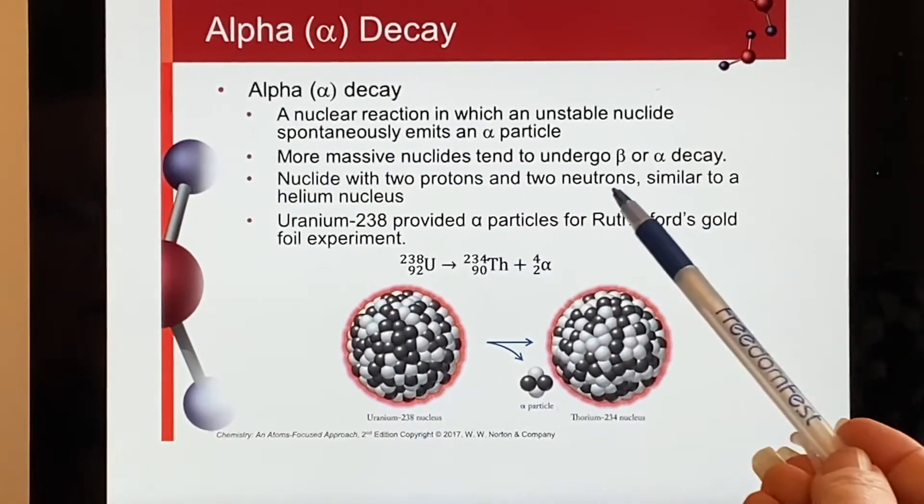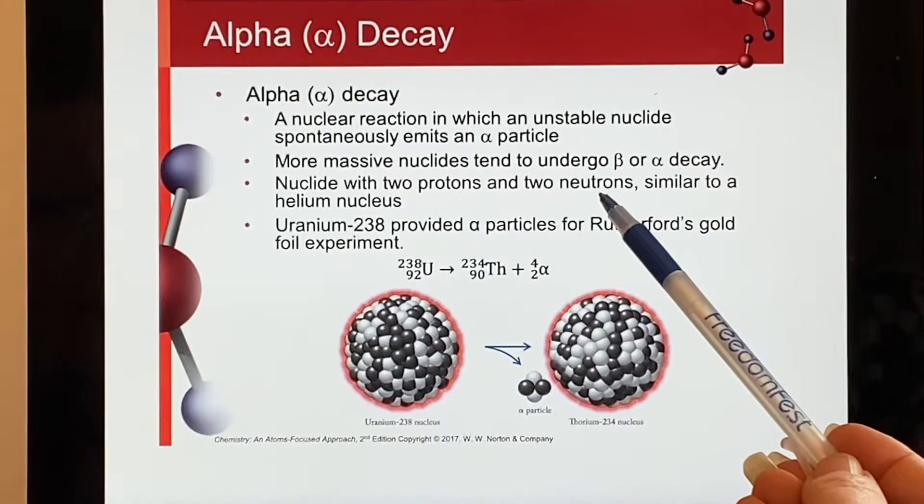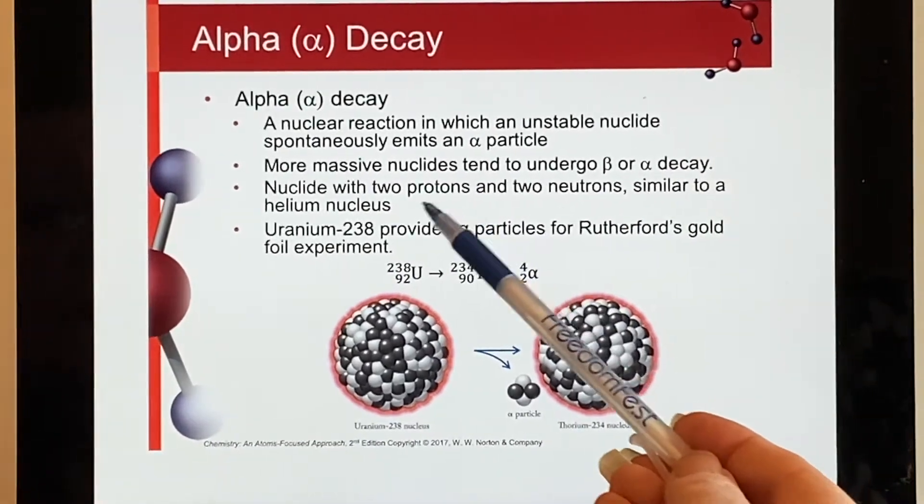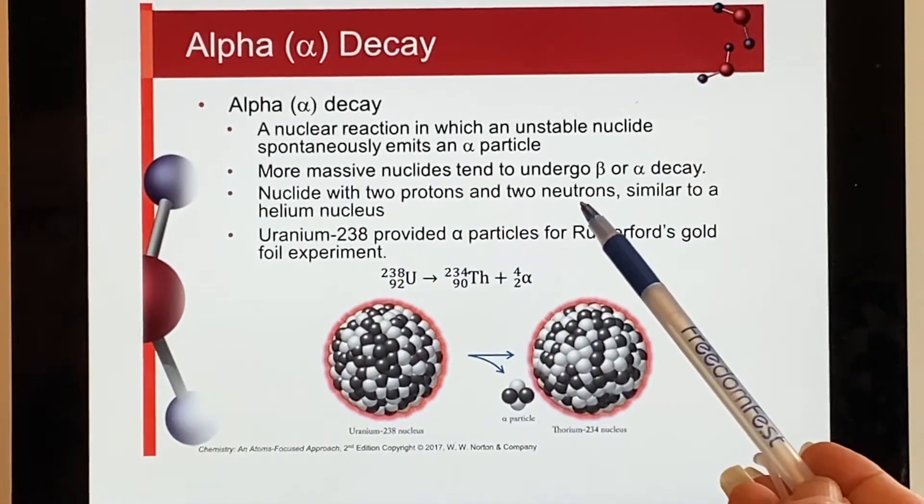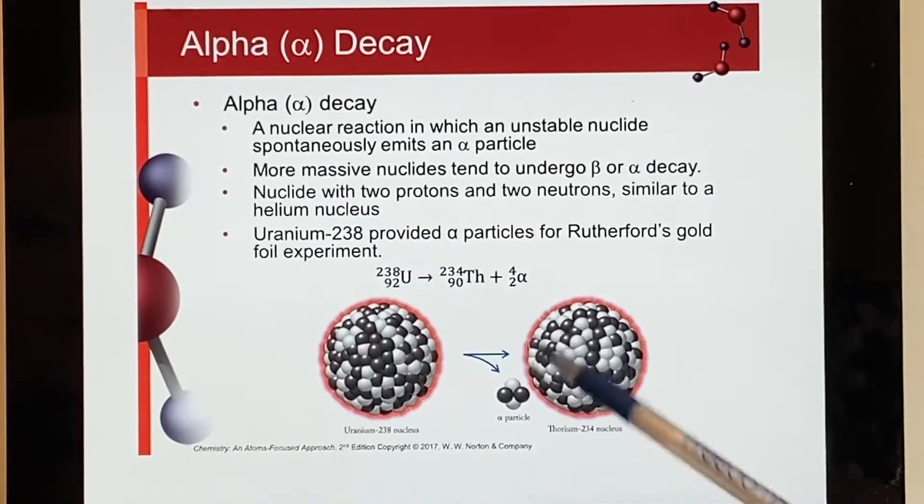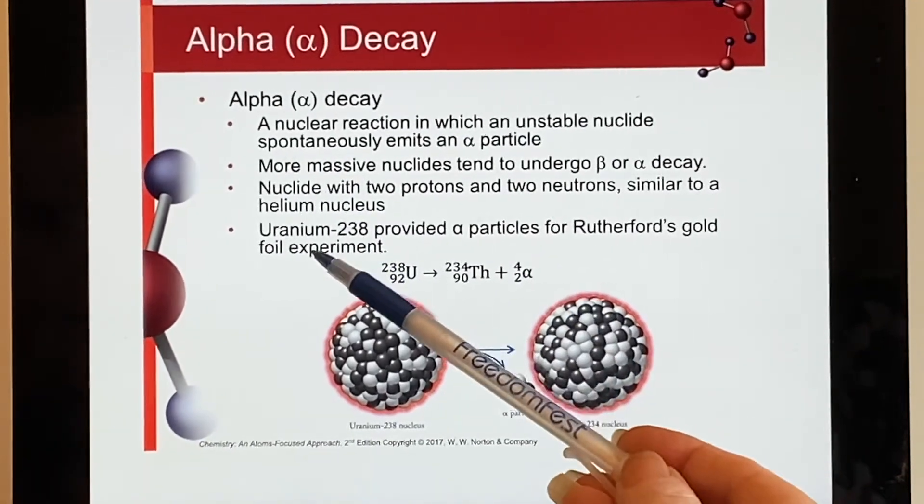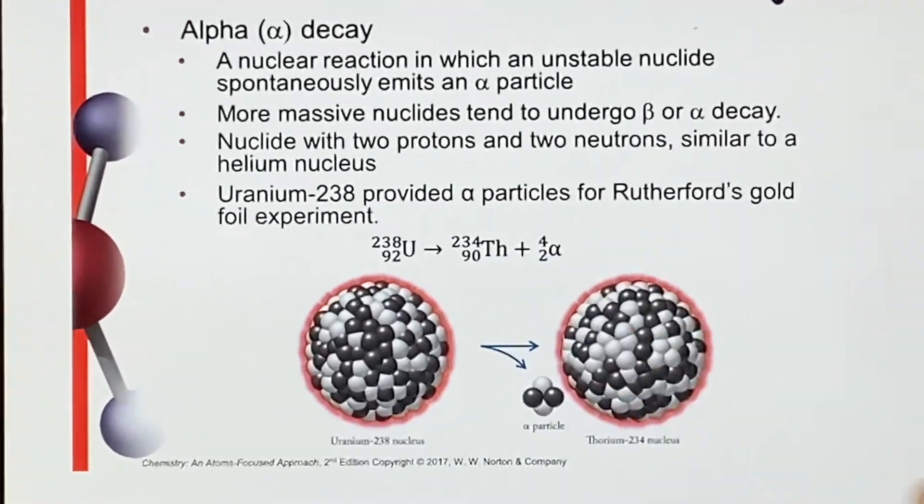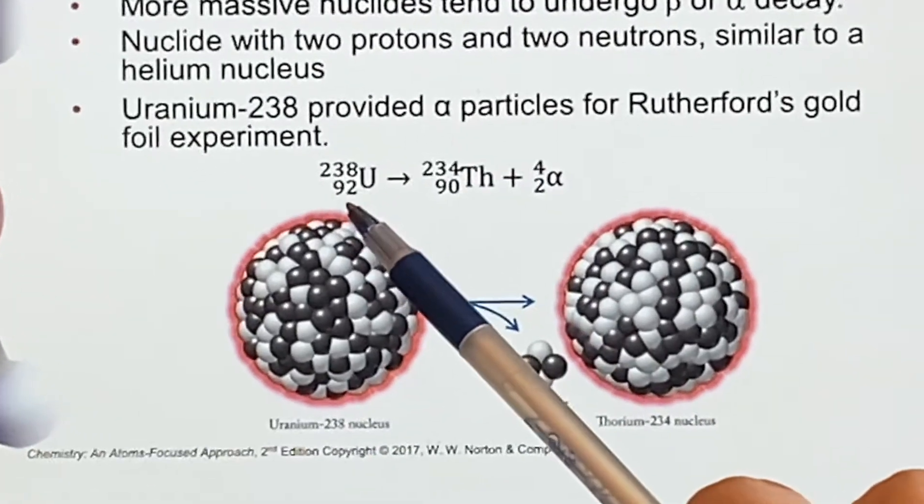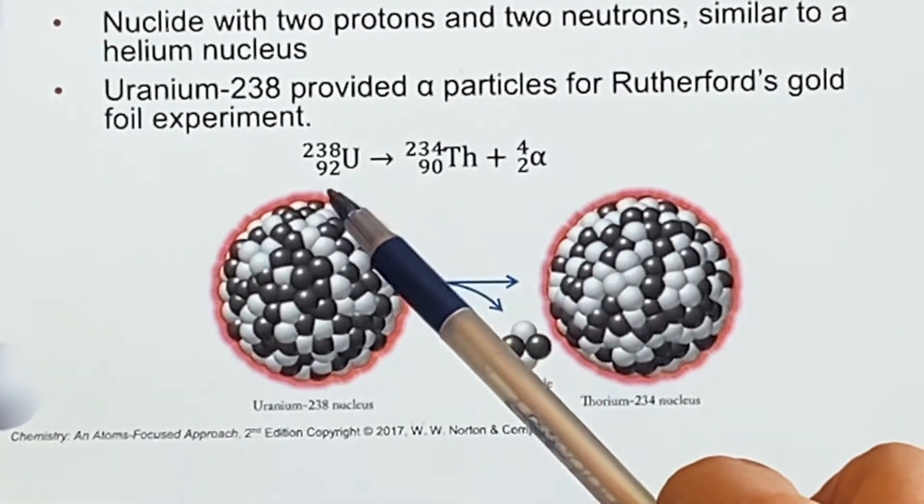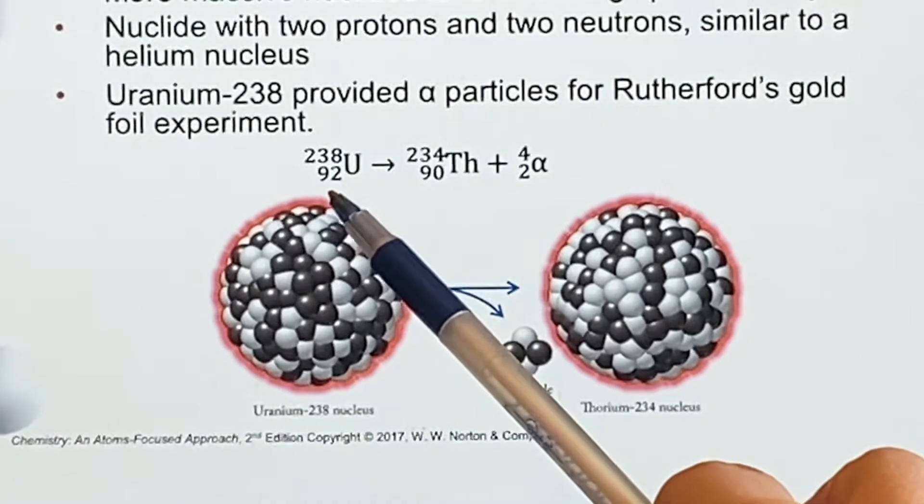So what is an alpha particle? Well, I said before it was a naked helium. So it has two protons and two neutrons—a helium nucleus essentially. And here is an example: here's the Uranium-238. Uranium is element number 92.